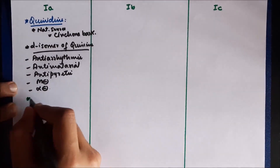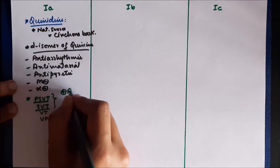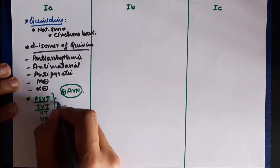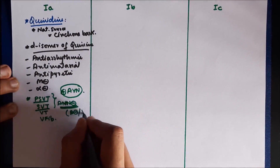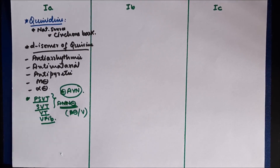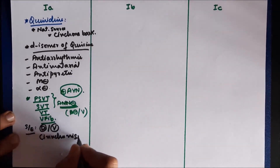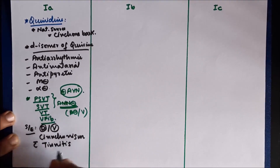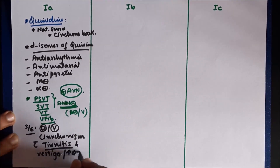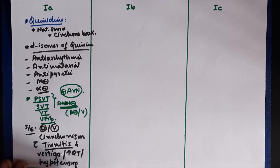Quinidine can be used in paroxysmal supraventricular tachycardia, supraventricular tachycardia, ventricular tachycardia, and ventricular fibrillation. In the first two cases, since the problem is in the atria and quinidine increases conduction through the AV node, an AV node-blocking agent such as digoxin, a beta blocker, or verapamil should be used alongside it. Side effects of quinidine include diarrhea, vomiting, cinchonism (associated with tinnitus and vertigo), increased QT interval with risk of torsades de pointes, and hypotension due to alpha-blocking properties.